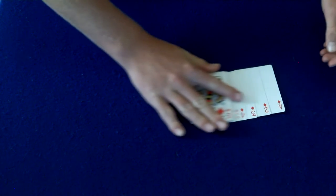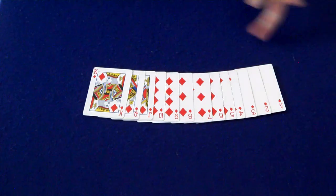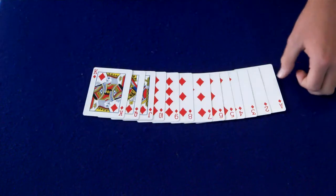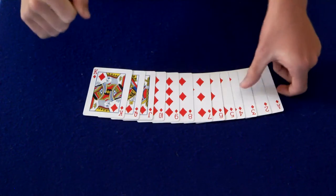And as you guys can see, it's now in perfect order: Ace, 2, 3, 4, 5, 6, 7, 8, 9, 10, Jack, Queen, King. Tell me if you guys like that trick. See you guys next time.